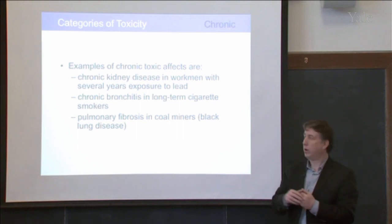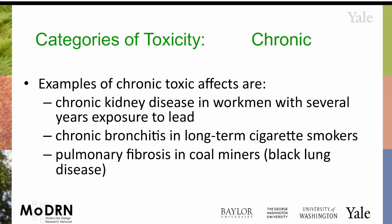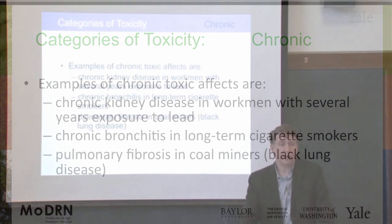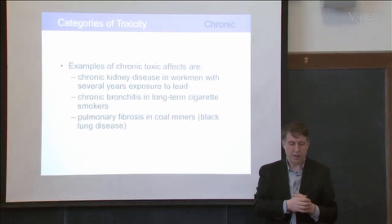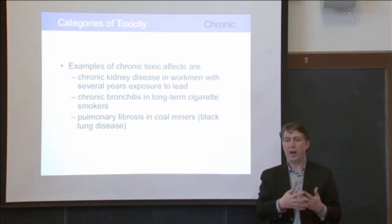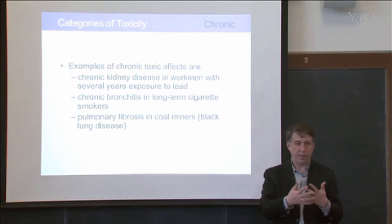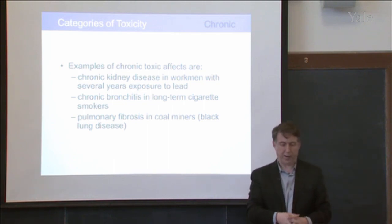Some of the types of chronic toxicity — epidemiology is the study of these types of effects across populations of people. When we look at workers who had years of lead exposure, one of the chronic toxic effects is kidney disease. Chronic bronchitis and long-term cigarette smoking, pulmonary fibrosis, and coal mines — black lung disease. Here we have large populations of people where you can actually measure these types of chronic toxic effects.